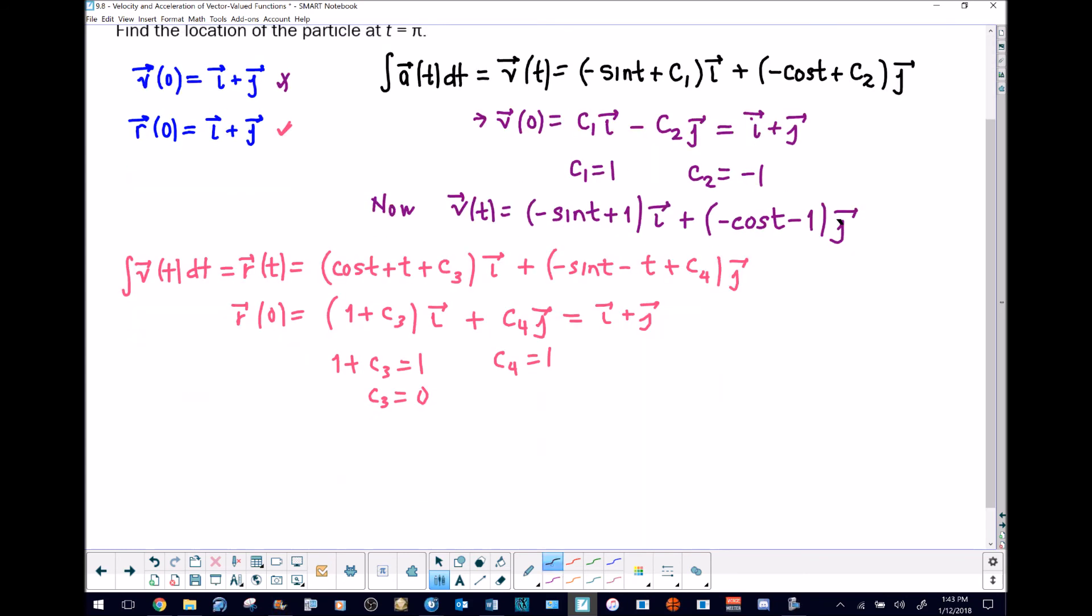When we put it all together, r of t is going to be cosine t plus t plus the zero which I won't write, multiplied by i, plus negative sine of t minus t plus our c4 which is one, times j.